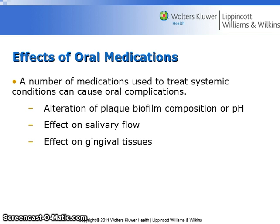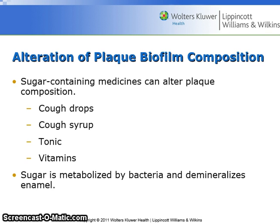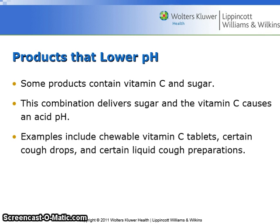A number of medications used to treat systemic conditions can cause oral complications by altering the plaque biofilm composition or pH, affecting salivary flow, and having an effect on gingival tissues. Sugar-containing medicines — including cough drops, cough syrup, tonics, and vitamins — can alter plaque composition, as sugar is metabolized by bacteria and demineralizes enamel. Some products contain vitamin C and sugar; this combination delivers sugar and causes an acidic pH. Examples include chewable vitamin C tablets, certain cough drops, and certain liquid cough preparations.